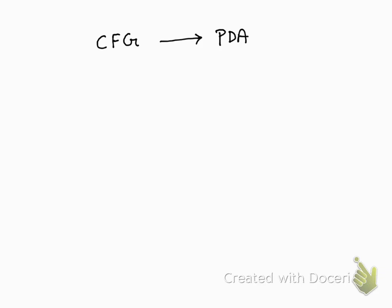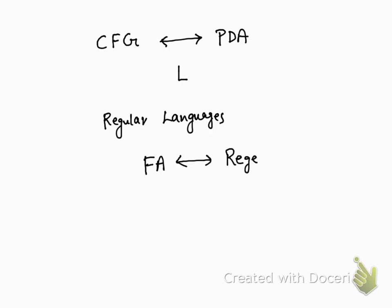In the coming two lectures we are going to look at the equivalence between context-free grammars and pushdown automata. That is, if for a language L we can write a context-free grammar, we can also create a pushdown automata for L and vice versa. This is similar to how for regular languages we proved the equivalence of finite state machines with regular expressions — if we have a finite state automata we can create a corresponding regular expression and vice versa. We are going to do the same thing with these two constructs.